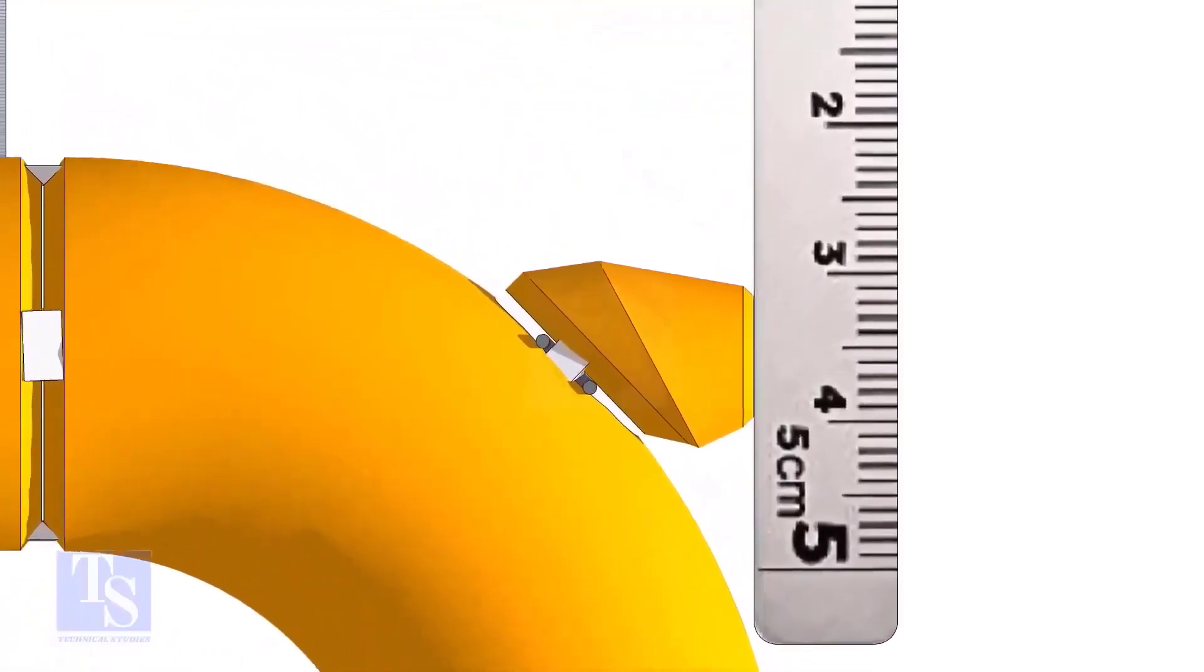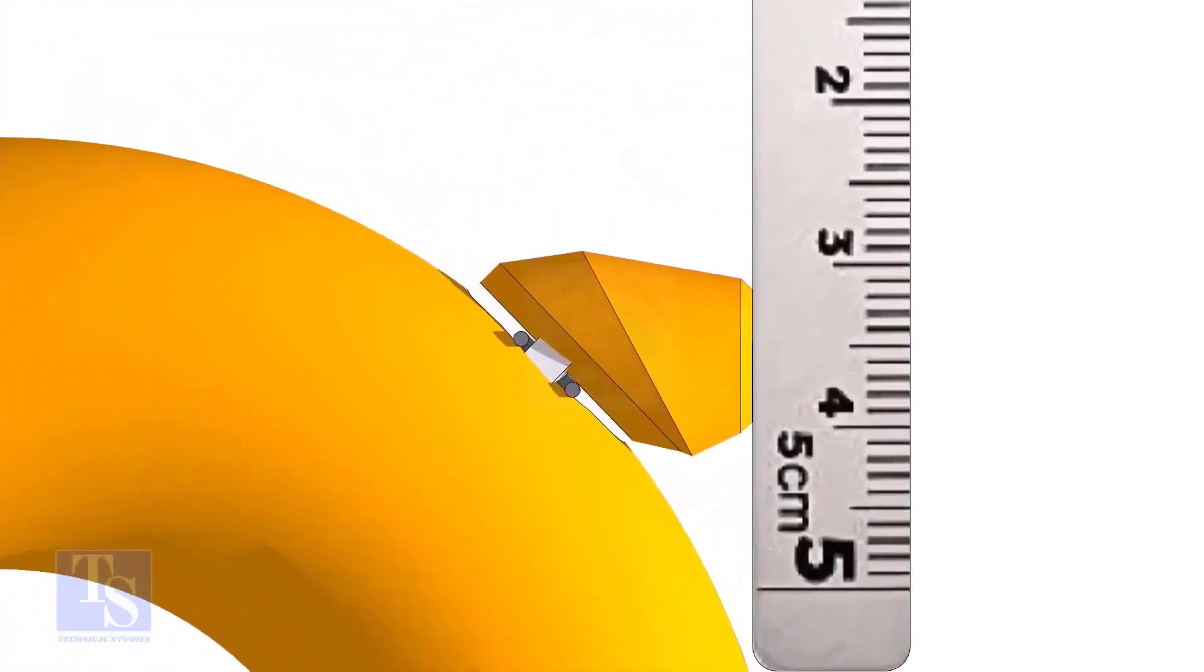Maintain the vertical squareness and tack weld on the top and bottom side of the elbowlet.